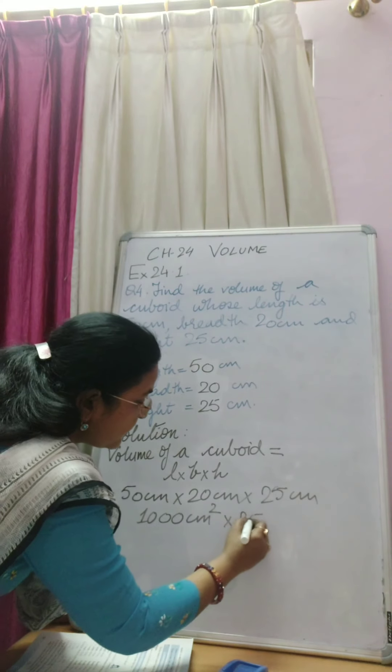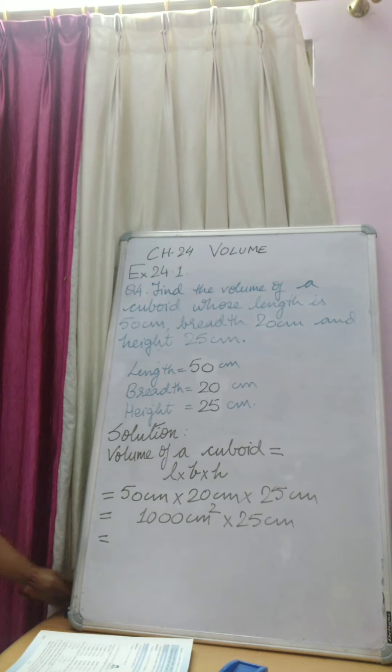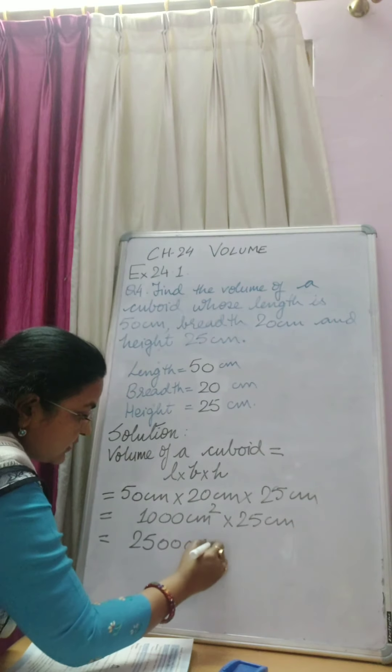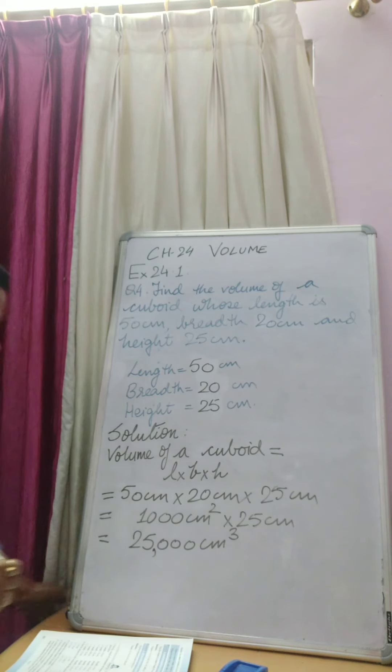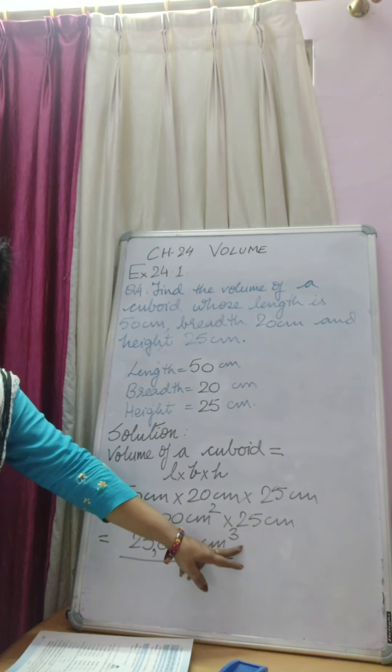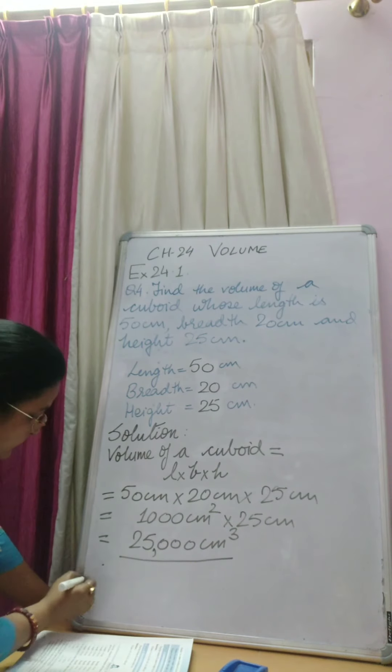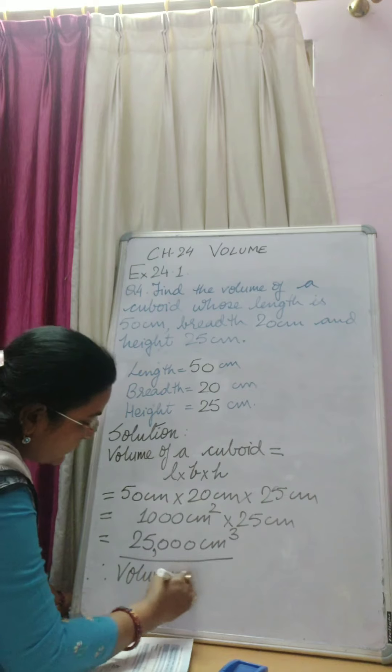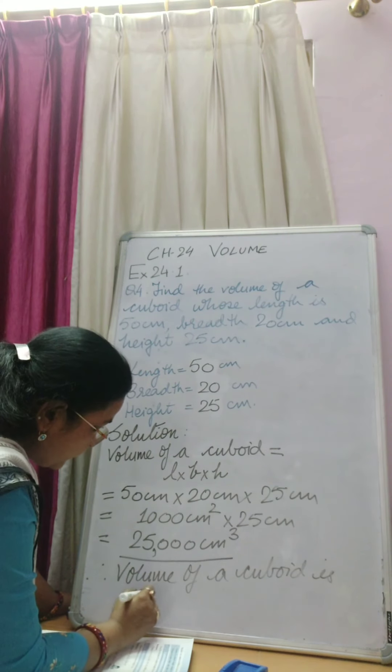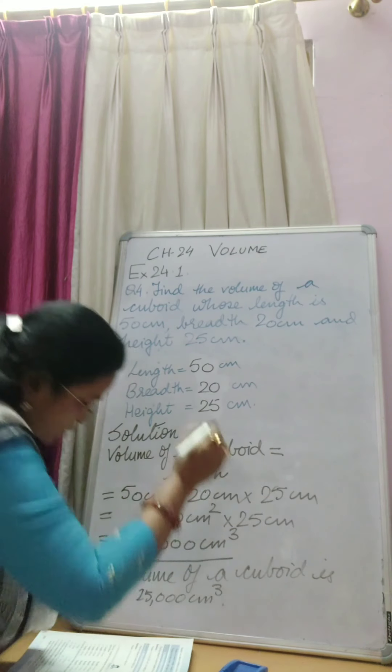So this is 1000 into 25 cm. Now we know that any number multiplied by multiples of tens, we write the number and the number of zeros. So 25 ones are 25. How many zeros? 1, 2, 3. So we will put 3 zeros here. Centimeter squared into centimeter that is centimeter cube. So this is 25,000 cm cube. So volume of this cuboid is 25,000 cm cube. Please make sure that you write centimeter cube, the unit of volume. Thank you children.